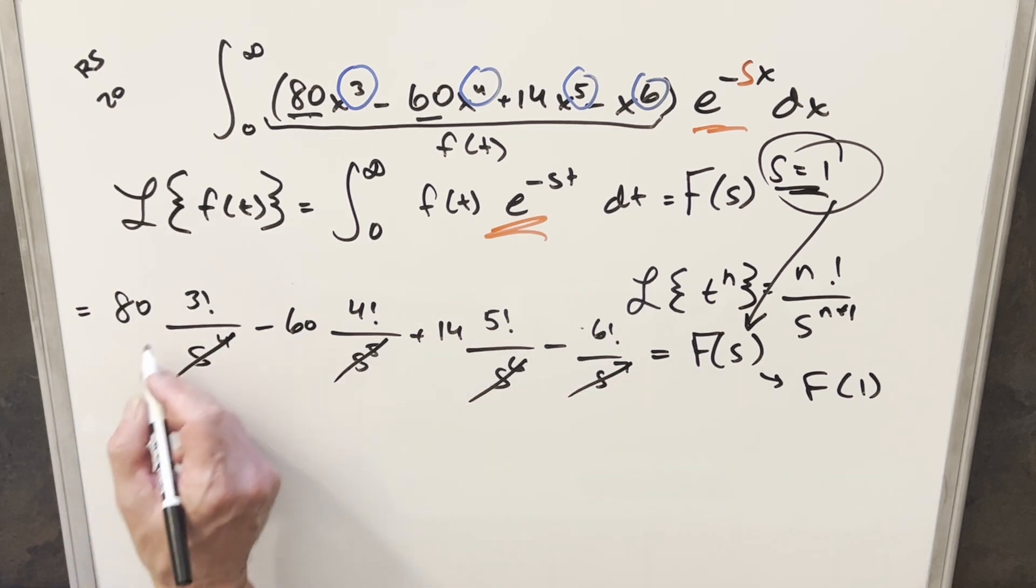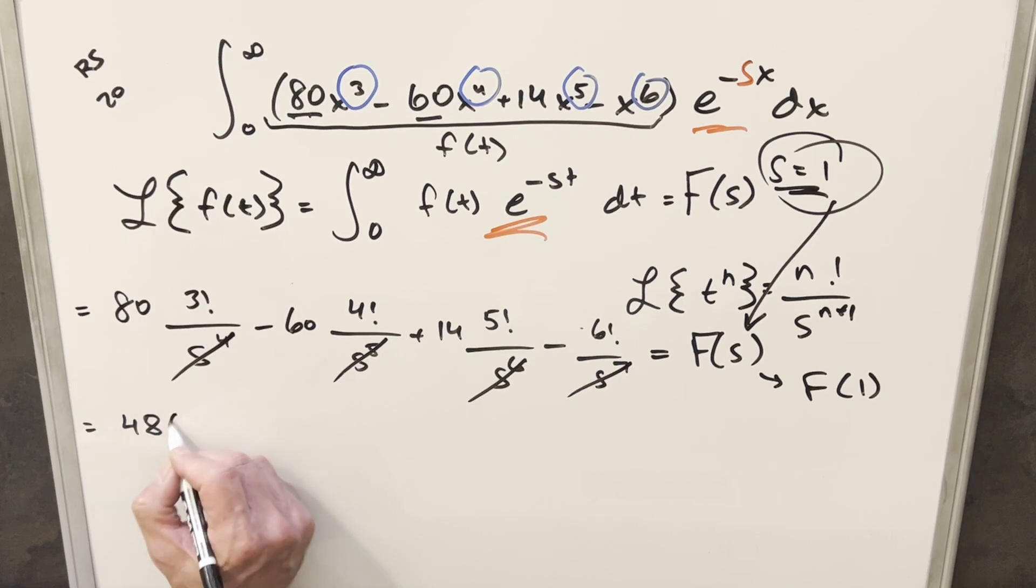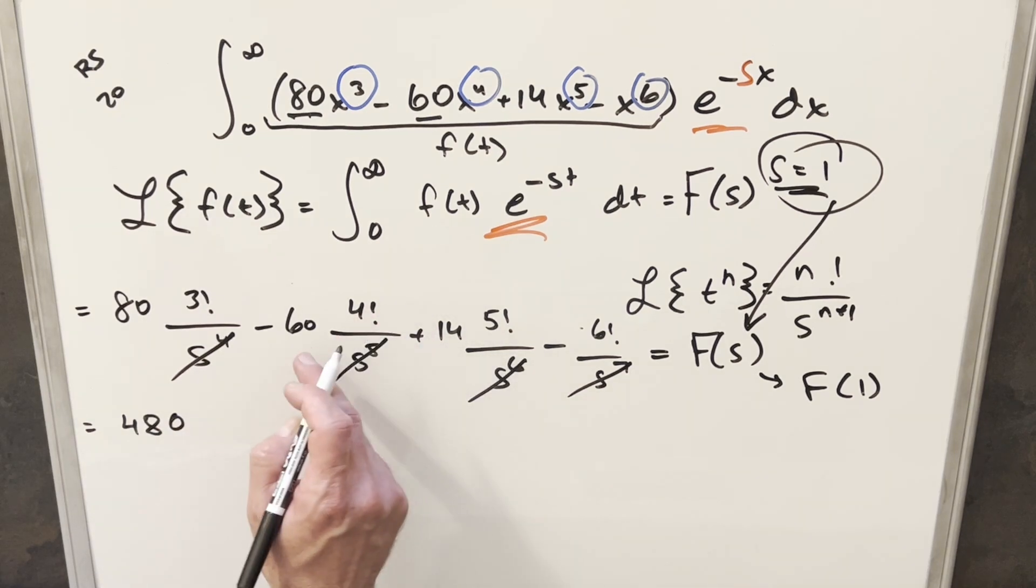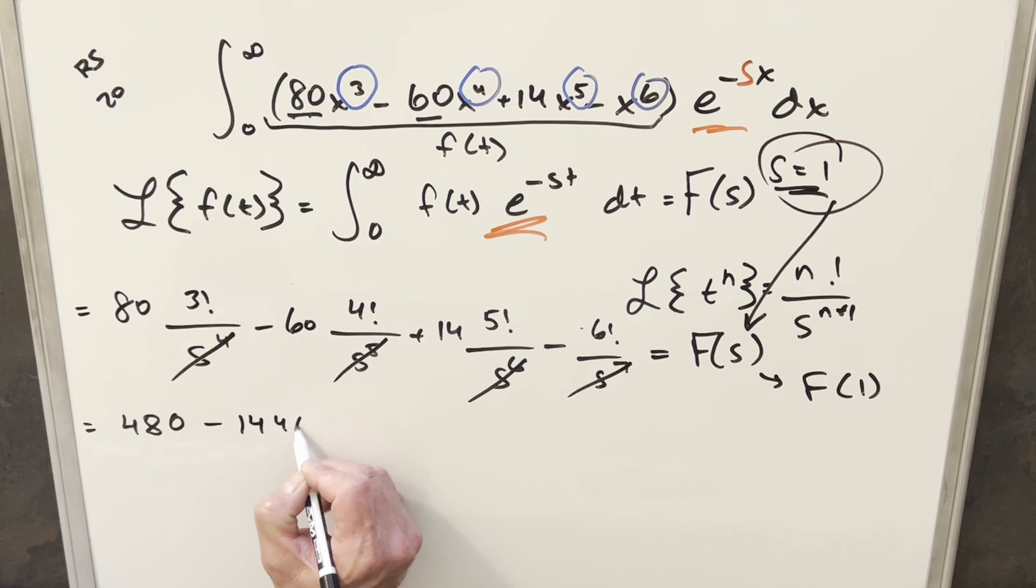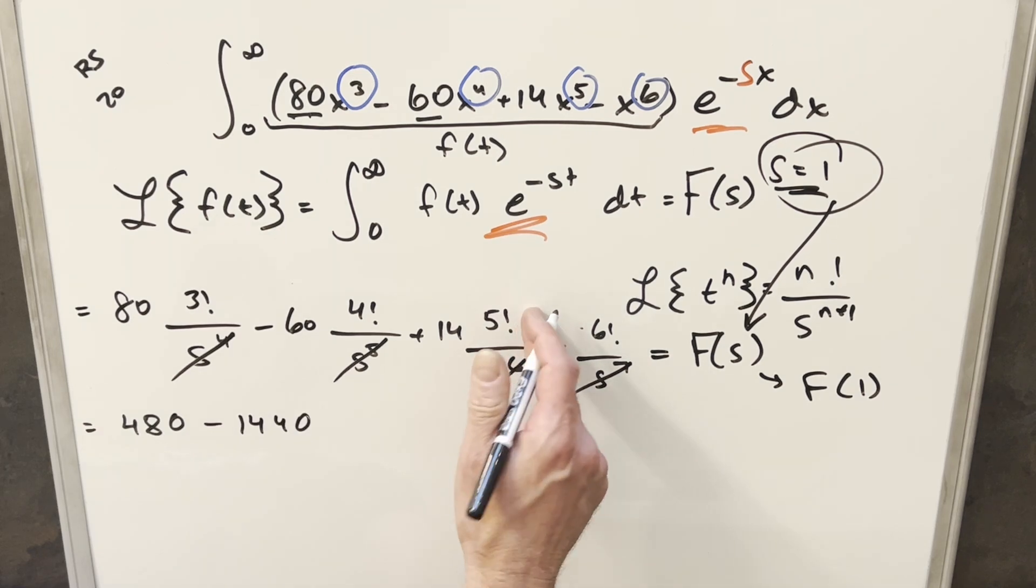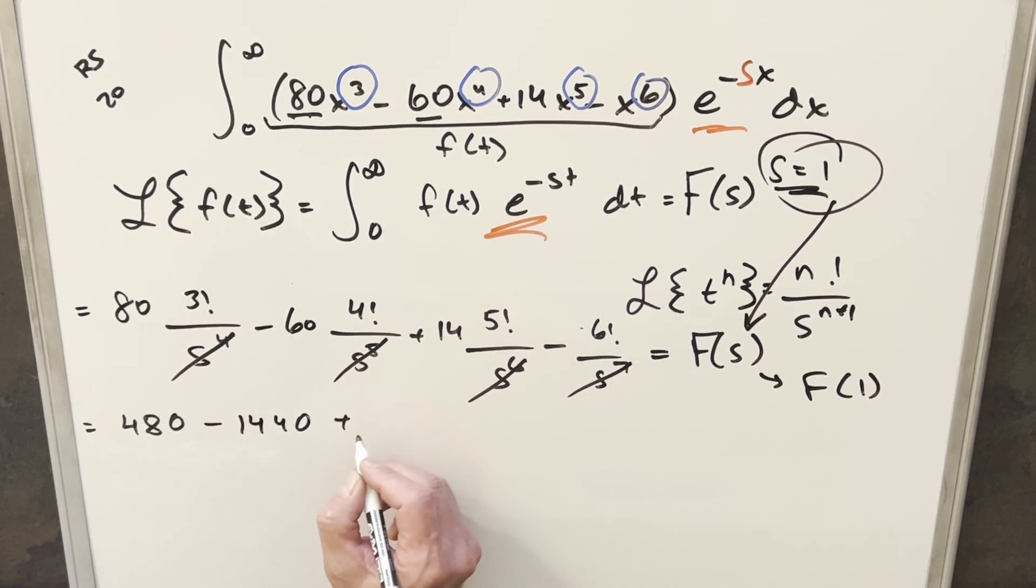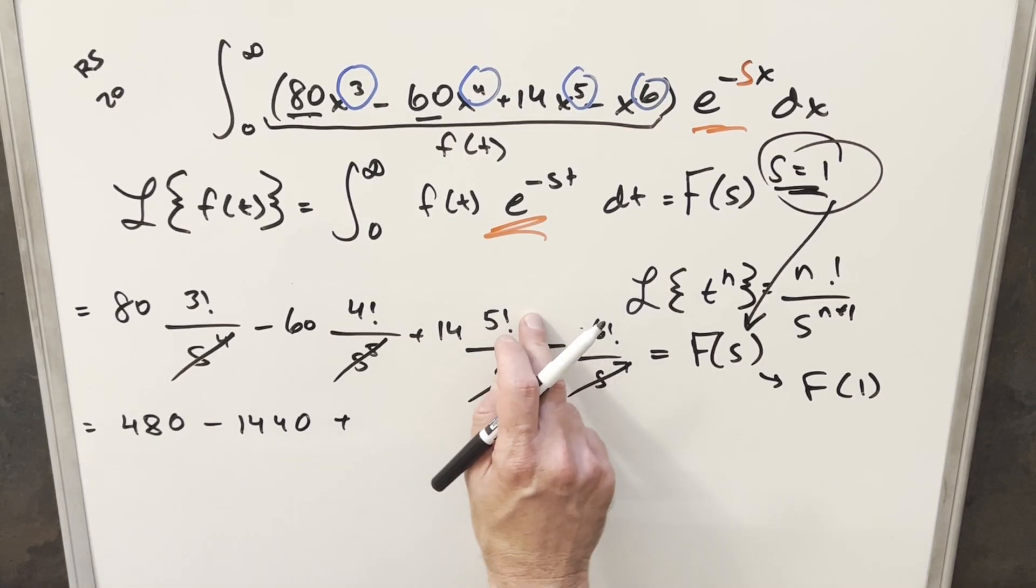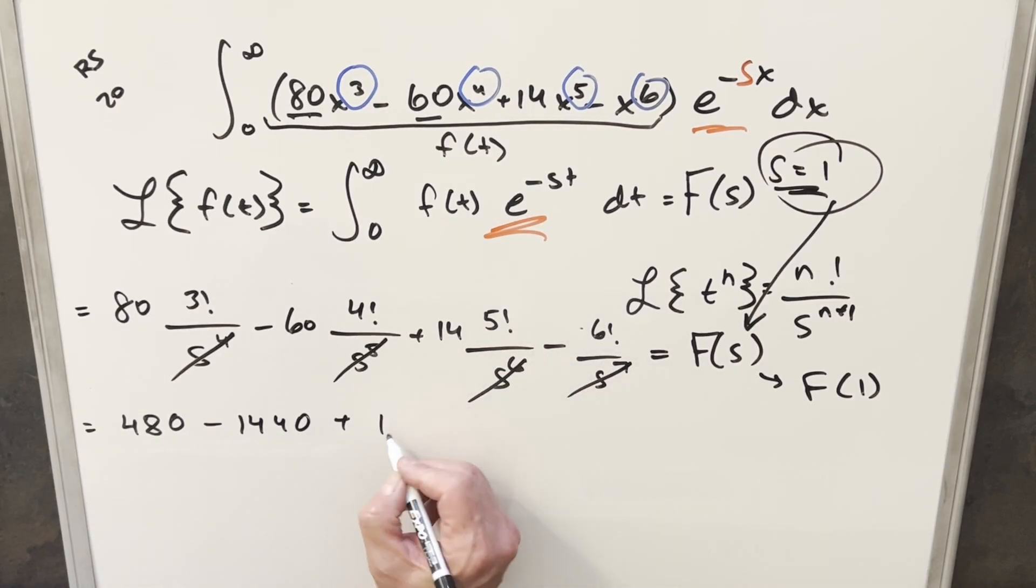So all we need to do is calculate all this and add it up. For the first one, 3! is 6 times 80 is 480. This one here, when you do 4! which is 24 times 60, that's going to be minus 1440. Here, 5! is 120 times 14 is going to be plus 1680. And then here, minus 6! is minus 720. Putting this together, we'll add 480 to 1680, and that's 2160. And then we do minus 1440 minus 720, that's minus 2160. So for my final solution to this, we get just zero.